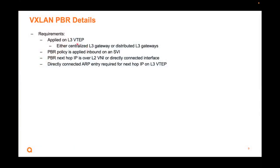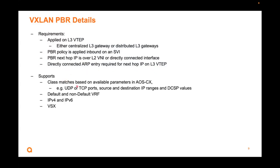Details: it has to be applied on a layer 3 VTEP — either centralized layer 3 gateway or distributed layer 3 gateways. The policy is applied inbound on an SVI. Your PBR next hop has to be over L2 VNI or directly connected interface. You need to have a directly connected ARP entry for the next hop on the layer 3 VTEP. Supported class matches include UDP, TCP, source, destination, IP ranges, and DSCP values. You can use it in the default or non-default VRF. It supports both IPv4 and IPv6, and also supports VSX.